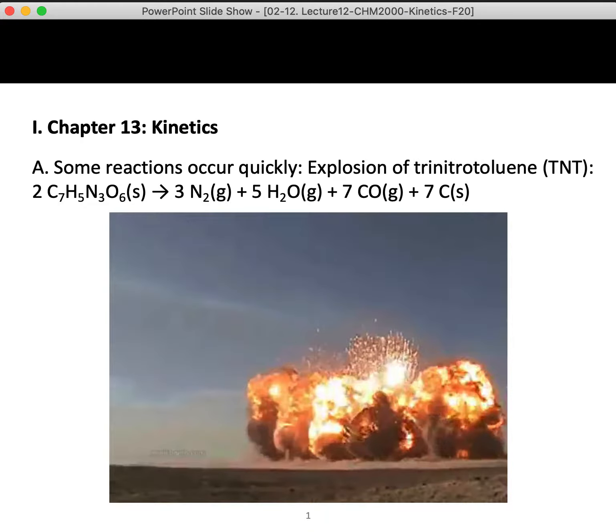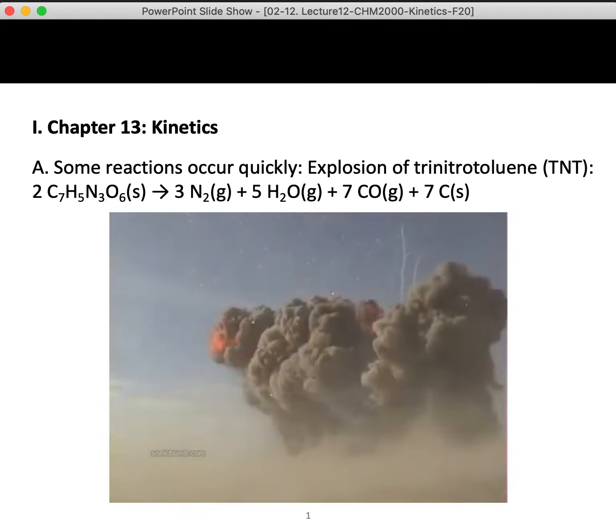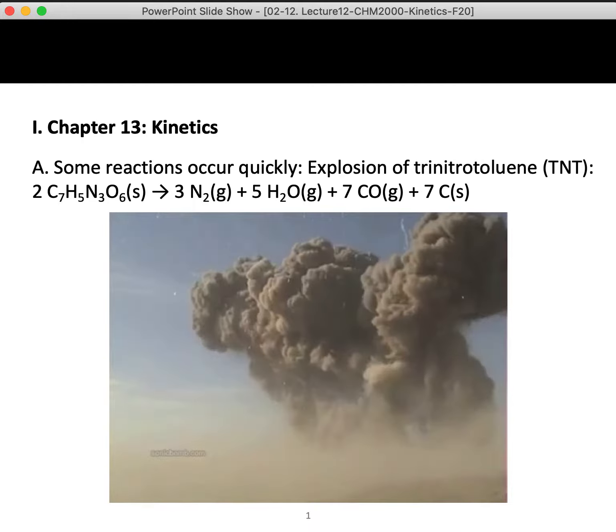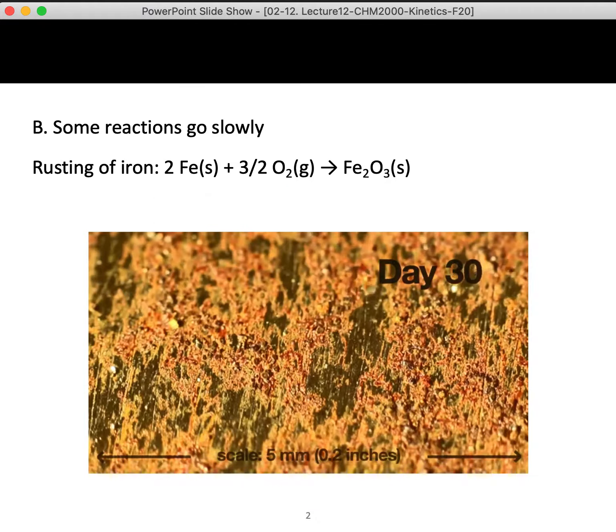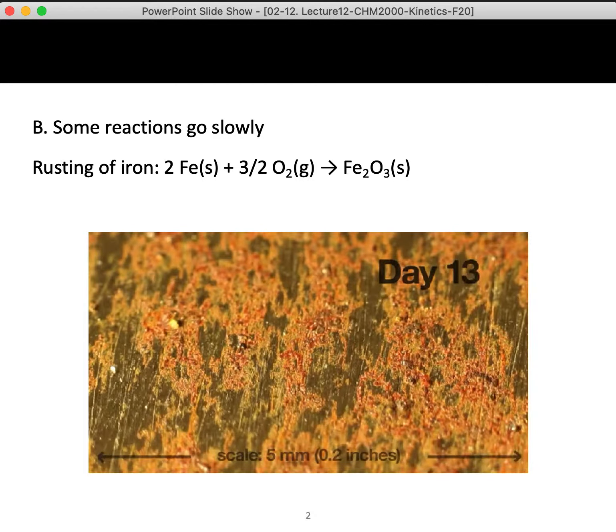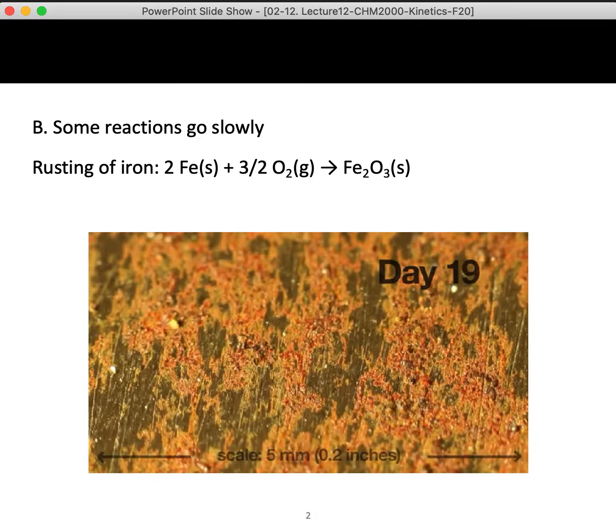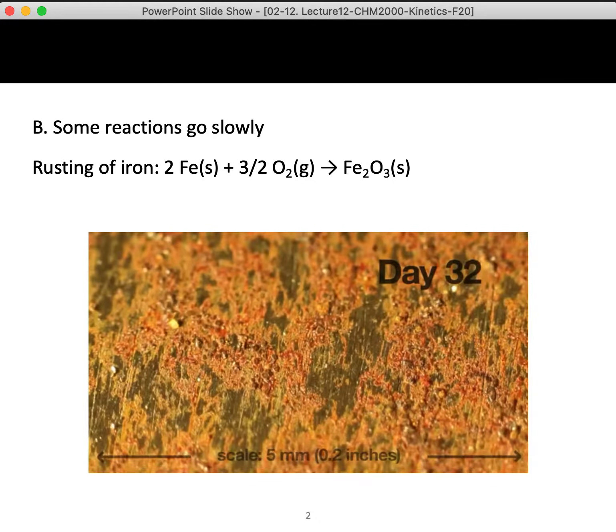We're going to start this off by showing a couple of reactions with different reaction rates. This is the first one. This is a very fast reaction and this is a very slow reaction occurring over days. So much slower, but still occurring. And we know that because we are observing the formation of products, iron oxide or rust on iron.